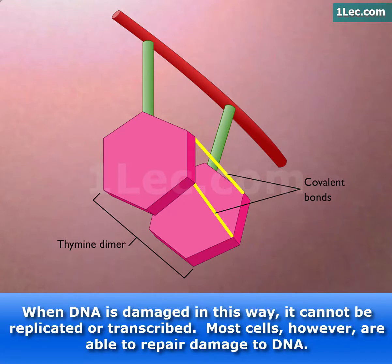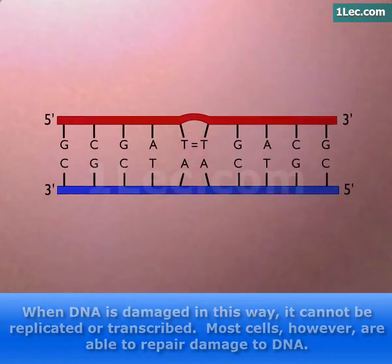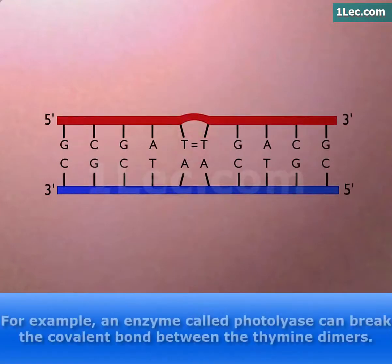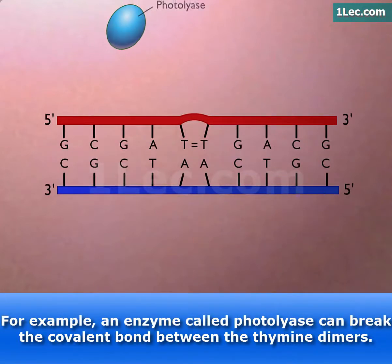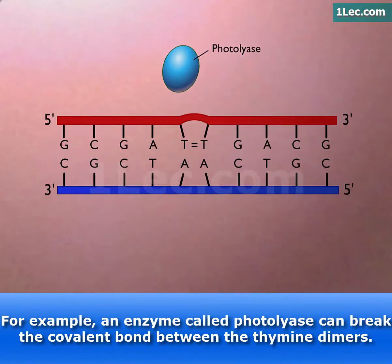Most cells, however, are able to repair damage to DNA. For example, an enzyme called photolyase can break the covalent bond between the thymine dimers.